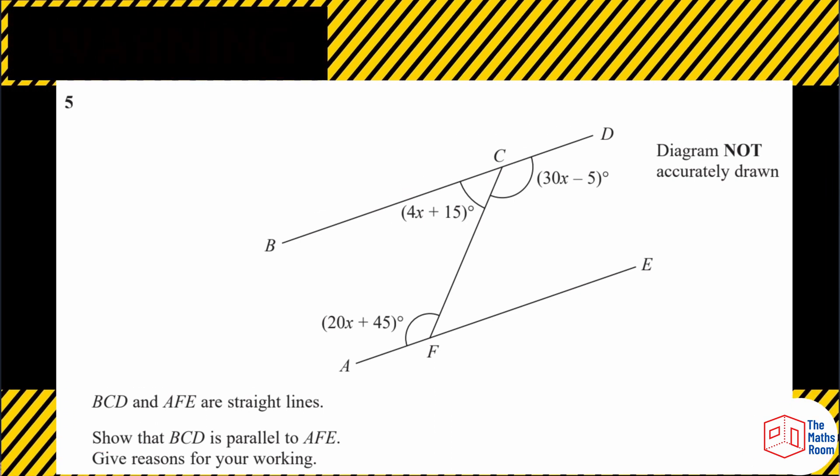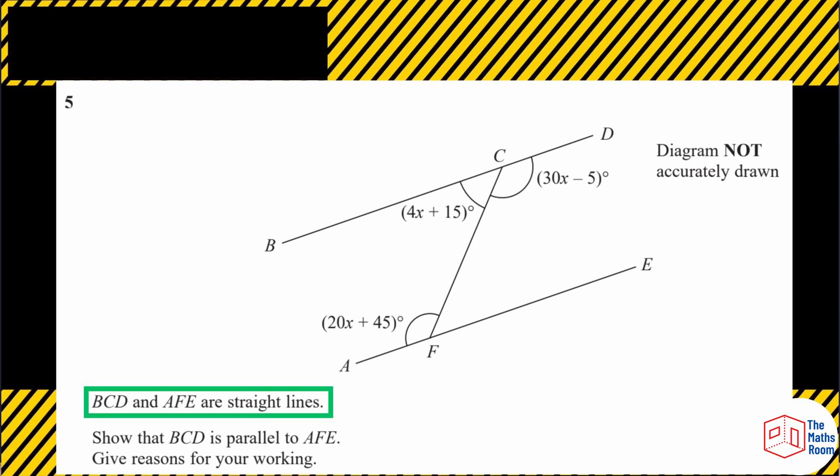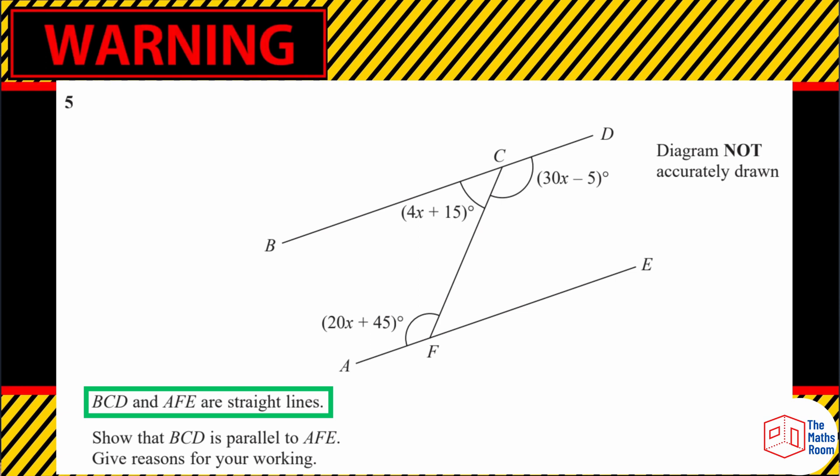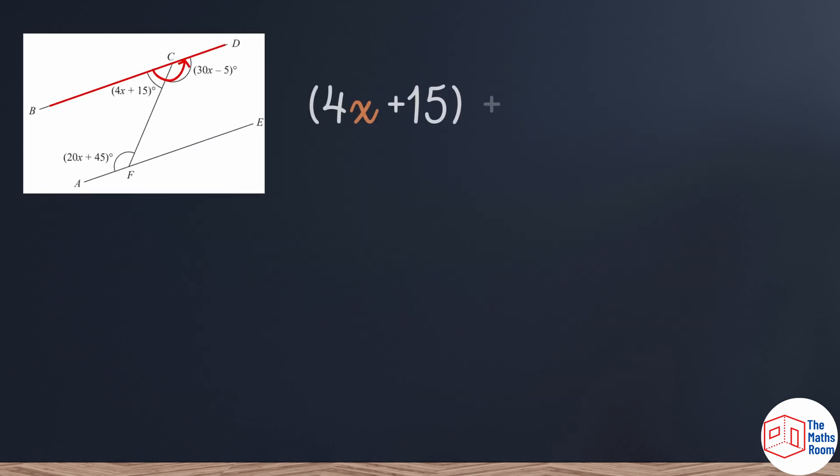A piece of information that they have given us that we can rely on is that BCD and AFE are straight lines. So because they've told us that is a straight line, we can use that knowledge. And we know that angles on a straight line add up to 180.